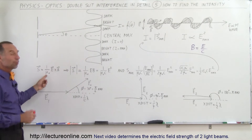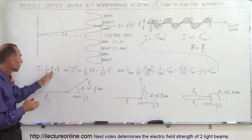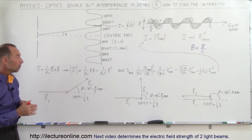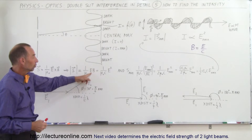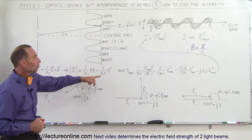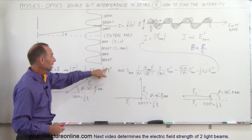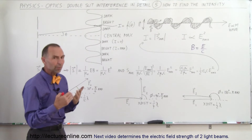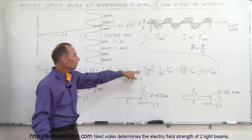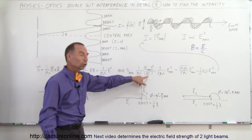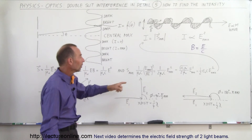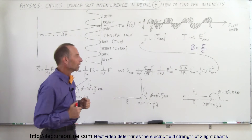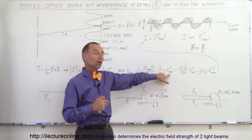The Poynting vector is one over the permeability of free space times the cross product of the electric field and the magnetic field, since they're perpendicular to each other. The absolute value can be written as (1/μ₀) times the magnitude of E times the magnitude of B. Since B = E/c, we can write it as E²/c divided by μ₀. The average value of the Poynting vector — which is the average intensity — uses the RMS value: the maximum amplitude of E divided by √2, then squared, giving us the average intensity in terms of the maximum electric field amplitude.